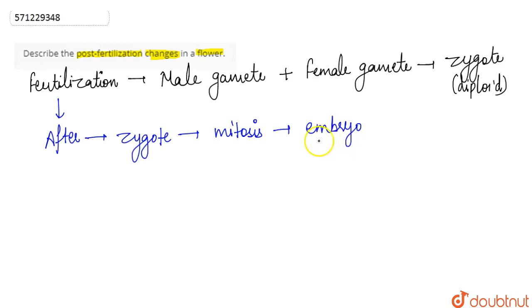Now once fertilization takes place, the ovule that is fertilized forms the seed, or it converts into seed. The ovule forms the seed or converts into seed.